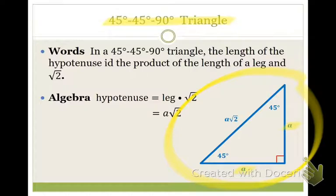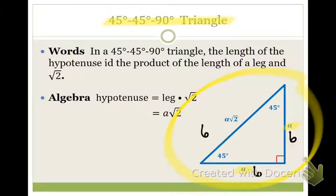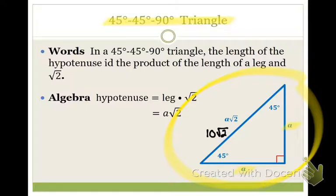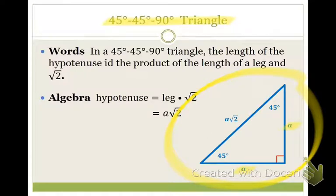Let's play out a few scenarios. What if the base was 6? The height would also be 6, and the hypotenuse would be 6 times the square root of 2. Another scenario: if the hypotenuse was 10 times the square root of 2, then the leg is just 10, and both base and height are 10. Do you see how the legs relate to the hypotenuse?